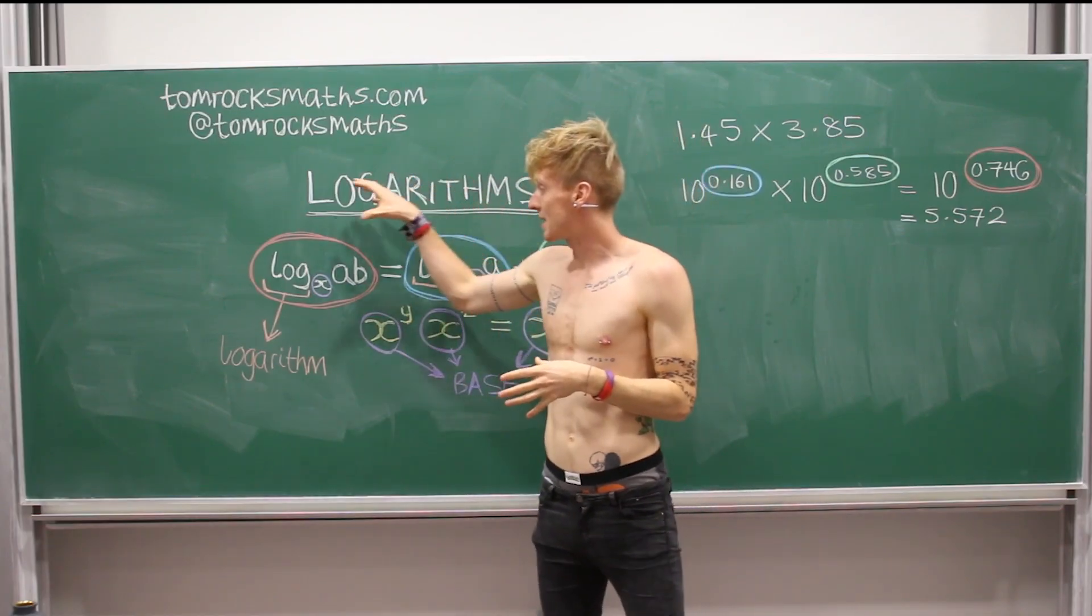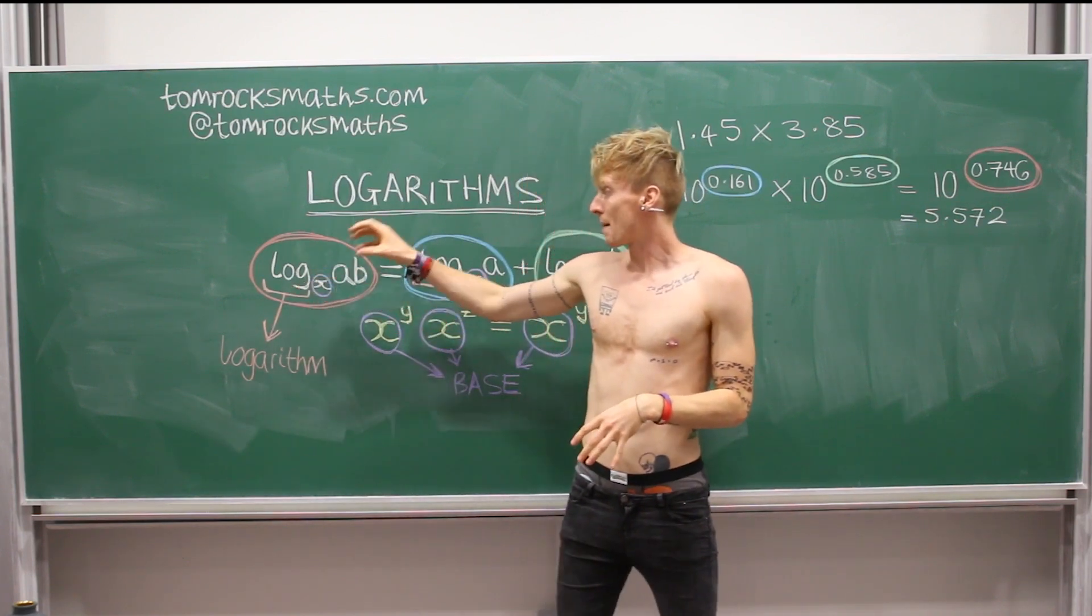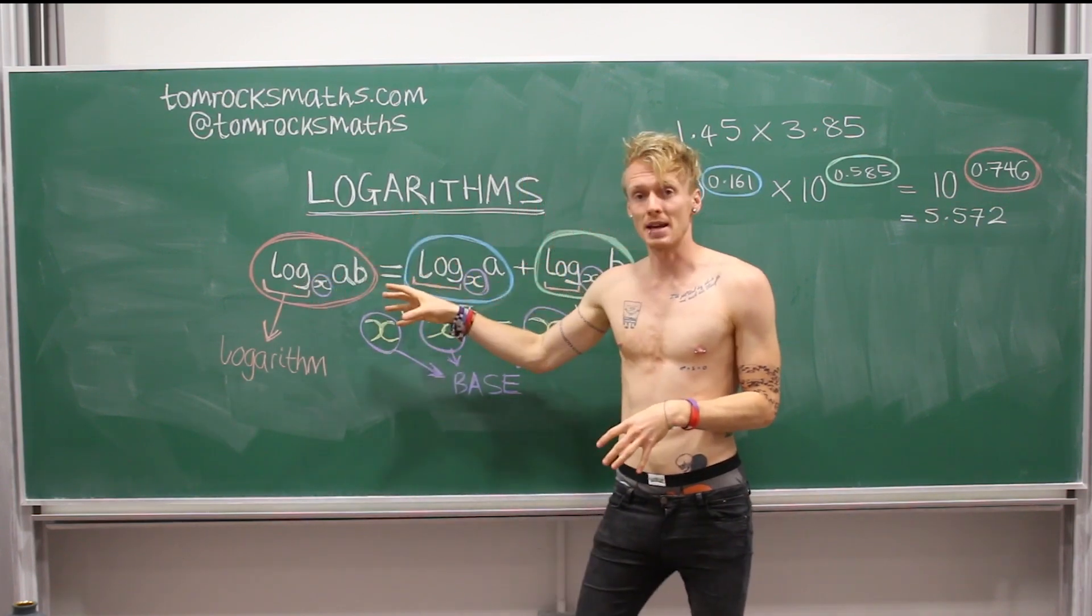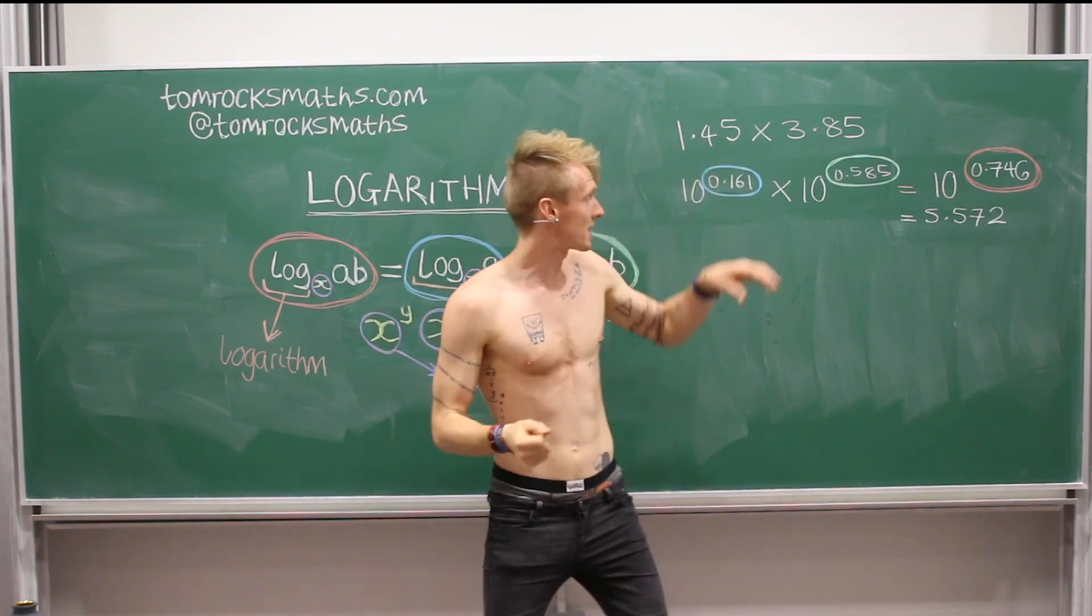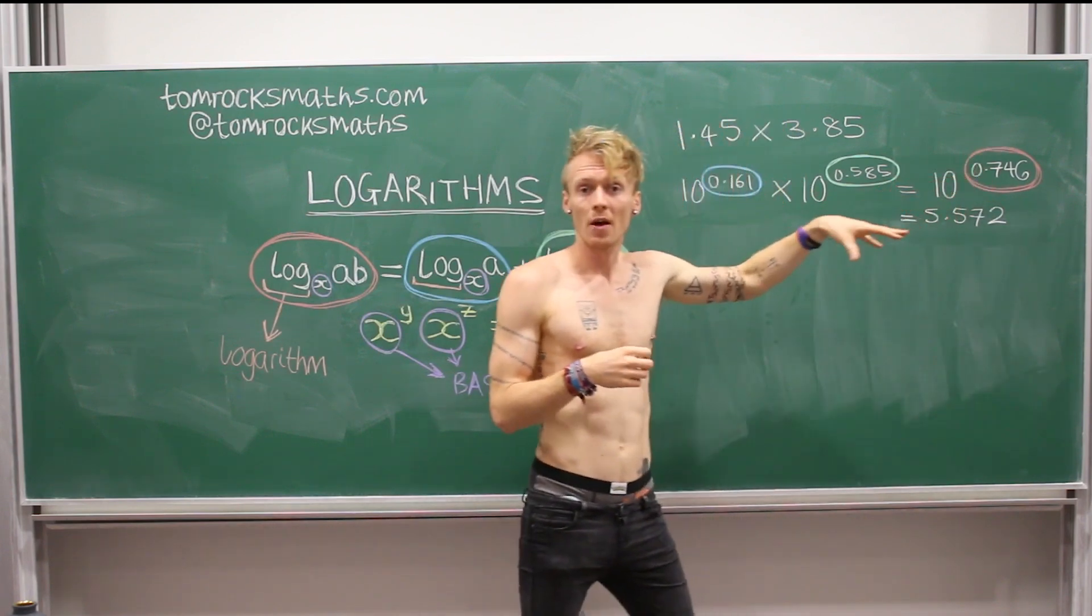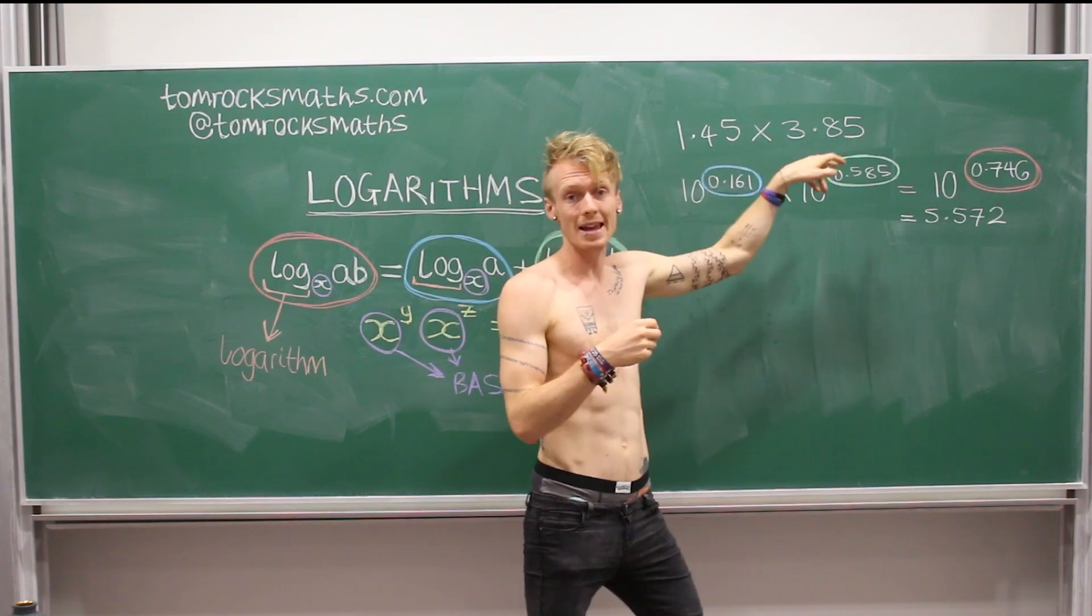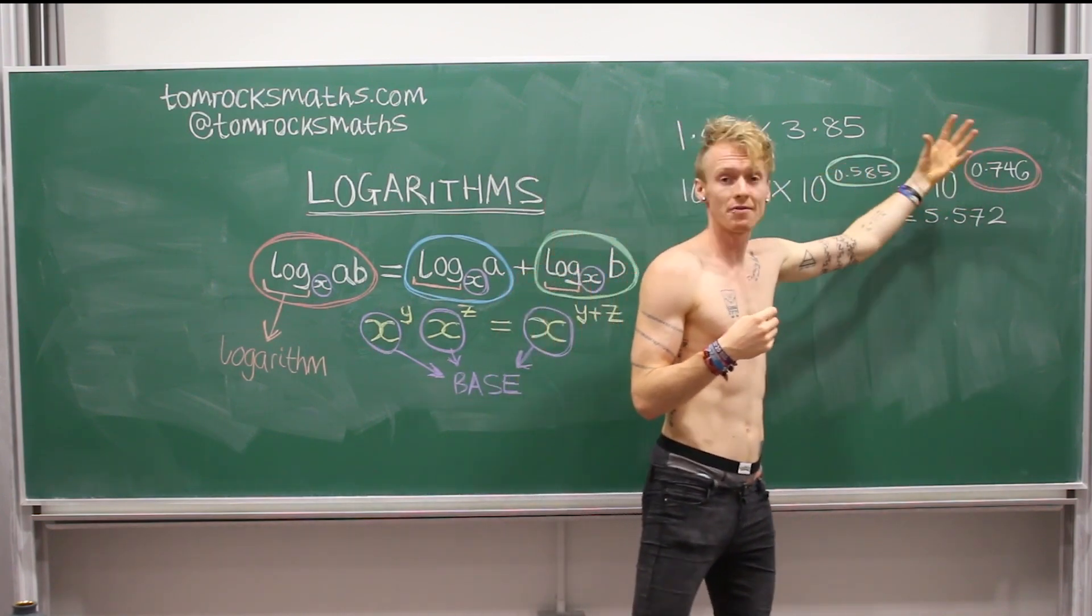And finally, the term on the left-hand side is telling us that the logarithm base x of A times B is just equal to the sum of these two. And that's exactly what we've done over here. So the term in red is just the power that 10 needs to be raised to to get the product of A and B, which is 0.746.